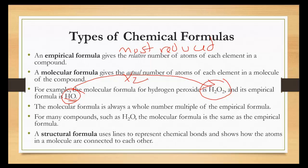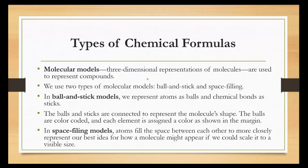And finally, we have molecular models. These are three-dimensional representations of molecules and are used to represent compounds. We use two types of molecular models, the ball-and-stick model and the space-filling model. In ball-and-stick models, we represent atoms as balls and chemical bonds as sticks. The balls and sticks are connected to represent the molecule's shape.